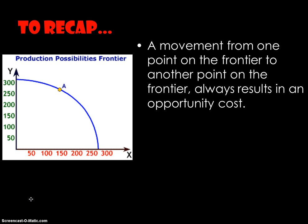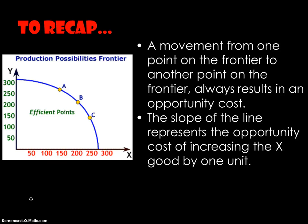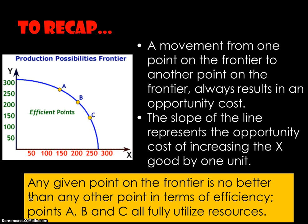To recap: a movement from one point on the frontier to another always results in an opportunity cost. The slope of the line represents the opportunity cost of increasing the X-axis good by one unit. Any given point on the frontier is no better than any other point in terms of efficiency — points A, B, and C all fully utilize the resources, so any point on the curve is equally efficient. And that's a wrap.